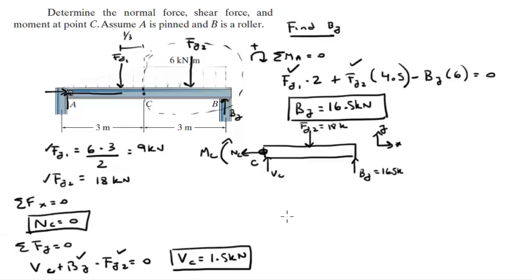And last but not least is the moment. Let's assume going clockwise is positive. So you know that the sum of the moments at C equals 0. So MC plus the moment created by Fy2 times 1.5 because that's the distance from C to Fy2.